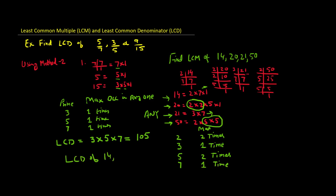So the LCD of 14, 20, 21, and 50 equals: 2 multiplied 2 times, multiplied by 3 once, multiplied by 5 twice, multiplied by 7 once. So: 2×2=4, 4×3=12, 12×5=60, 60×5=300, 300×7=2100.